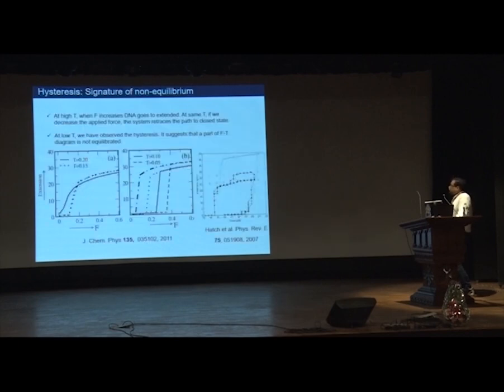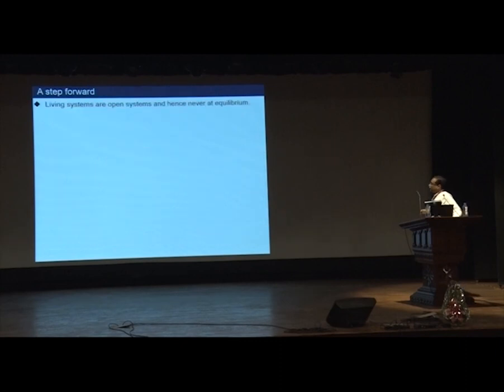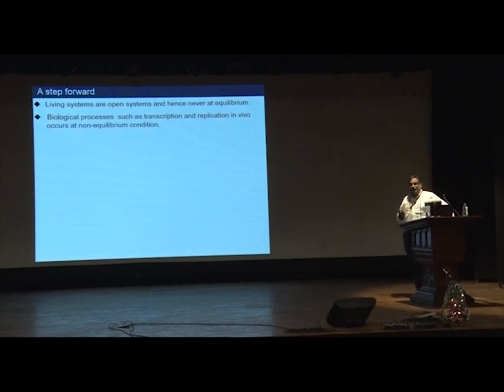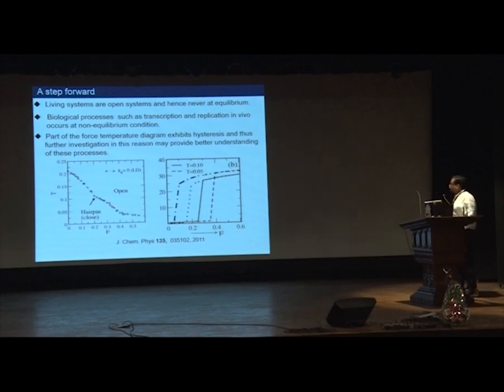If your temperature is high, you get a feature like this where you can see there is agreement with theoretical prediction, but at low temperature, high force, there is a hysteresis. In fact, this hysteresis has also been seen in experiments by the same group, published much later in 2007. Whenever you see hysteresis, it says that the system is not equilibrated and you are in a non-equilibrium system. Non-equilibrium systems are important because all living systems are in non-equilibrium, they are not in equilibrium. Observation of such things is very important because all biological processes we are studying are in non-equilibrium, and part of the force-temperature diagram which is in non-equilibrium may provide a better understanding of the process.